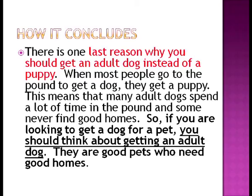He lists advantages of the adult dog versus disadvantages of the puppy, and then concludes: 'There is one last reason why you should get an adult dog instead of a puppy. When most people go to the pound to get a dog, they get a puppy. This means that many adult dogs spend a lot of time in the pound and some never find good homes. So if you are looking to get a dog for a pet, you should think about getting an adult dog. They are good pets who need good homes.' This is the climax of the persuasion — he makes his point very clear. This is how we approach an argumentative essay.